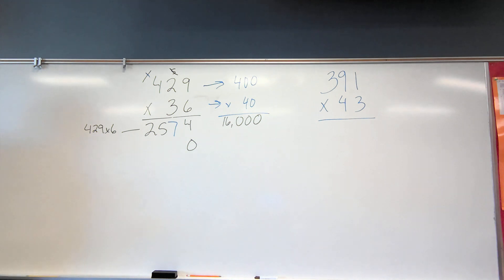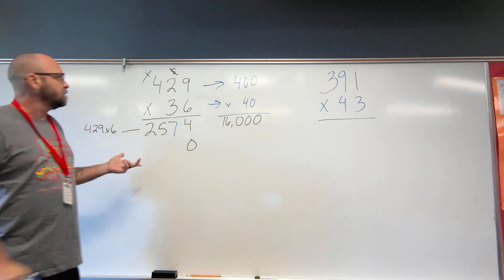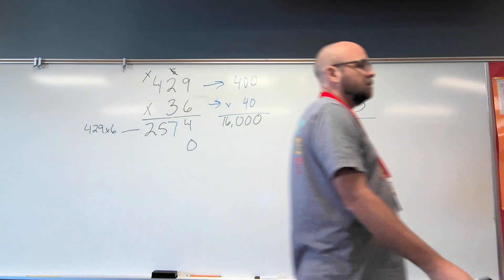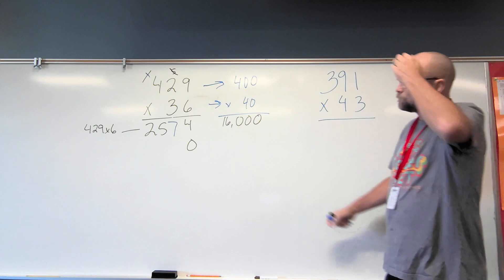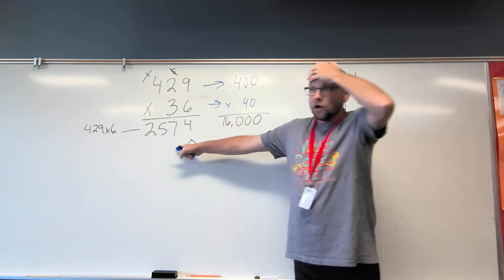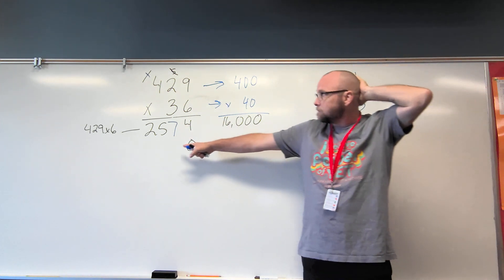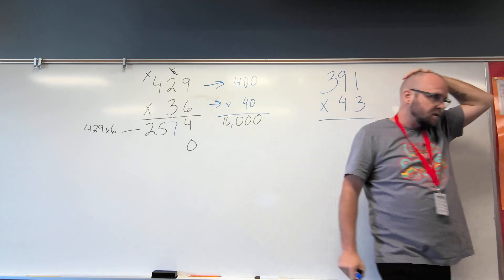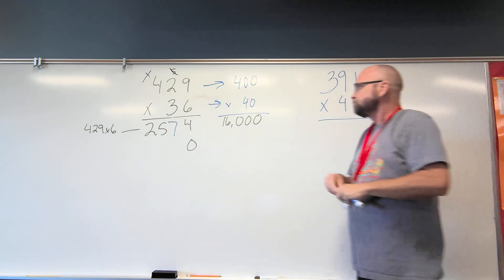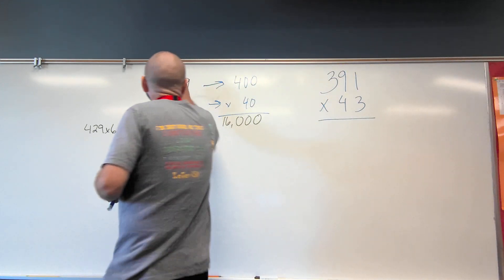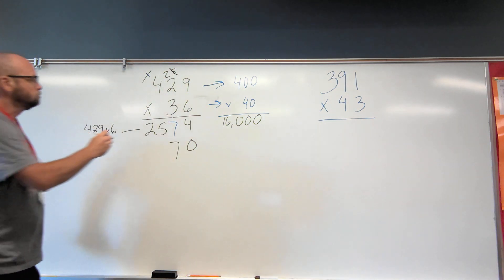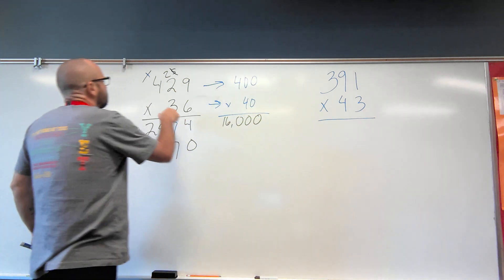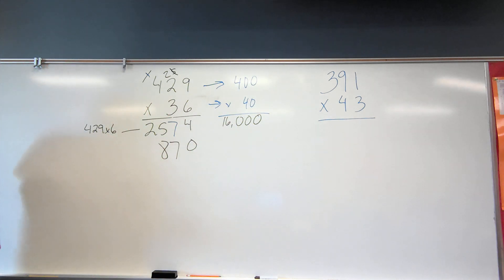And I need to start in my tens place. Now all I have to know is my multiples of three. If I know my three multiplications, then we got this down and it's real easy. So now I start, my next number is going to be in the tens place. So three times nine is? 27. Three times two is? Six. Plus two is? Eight. Three times four is? 12.